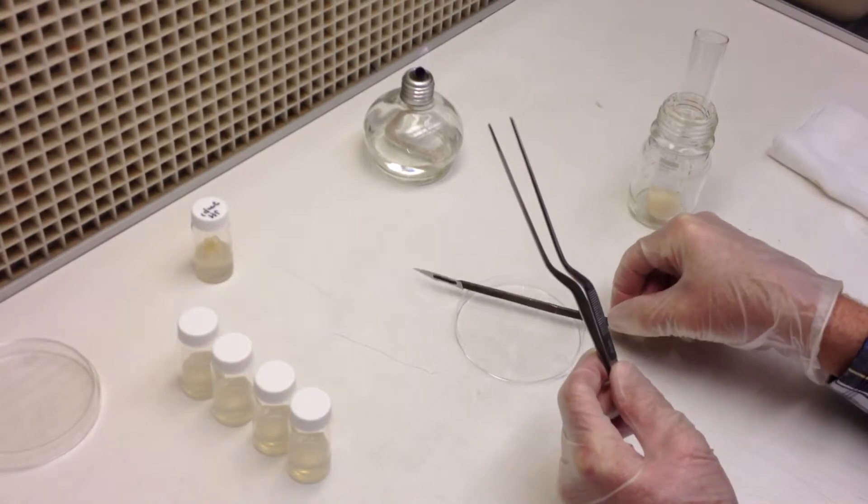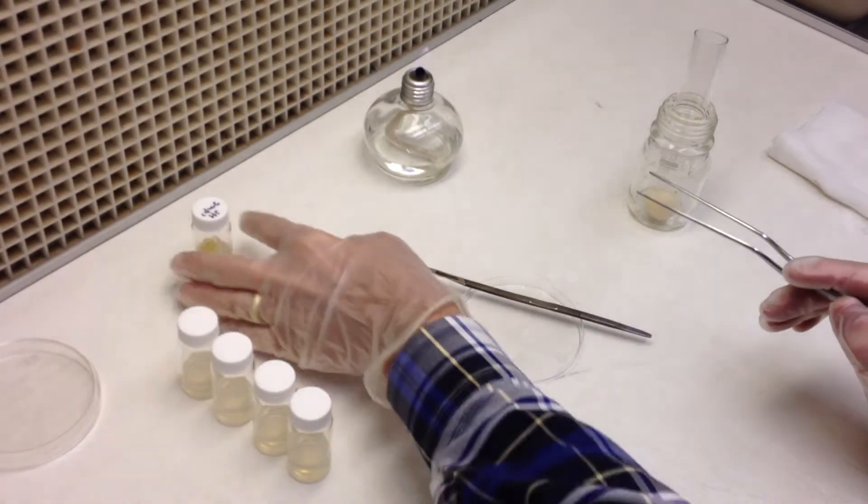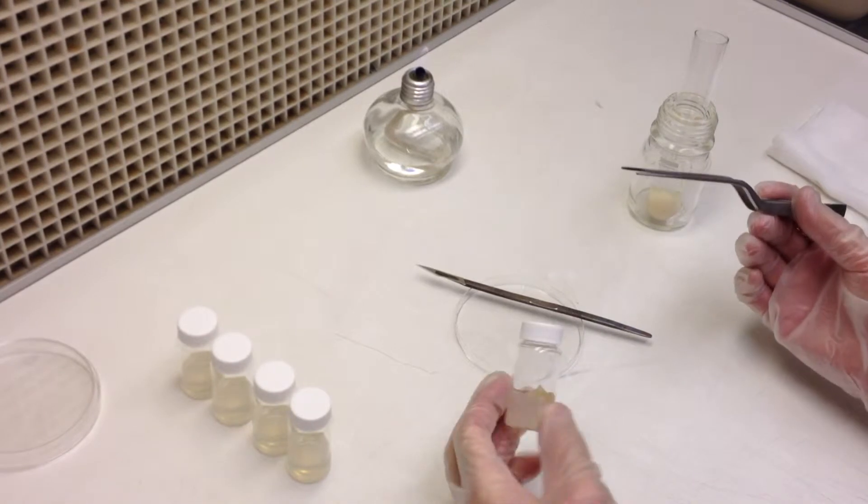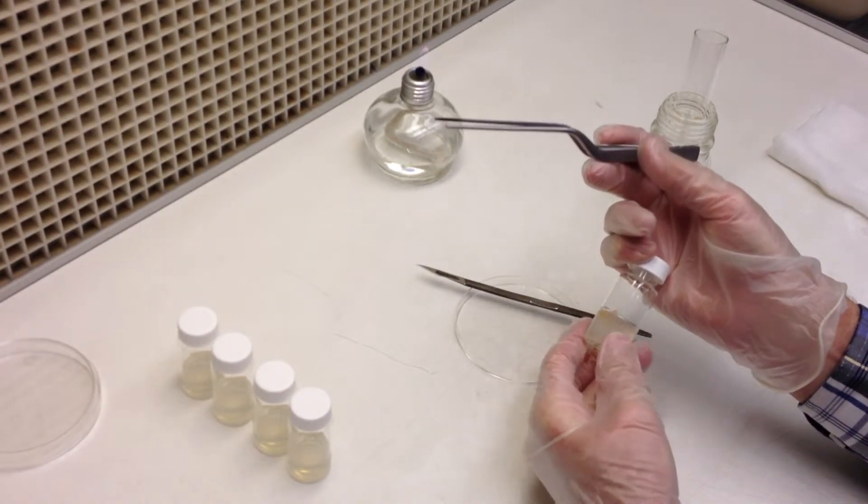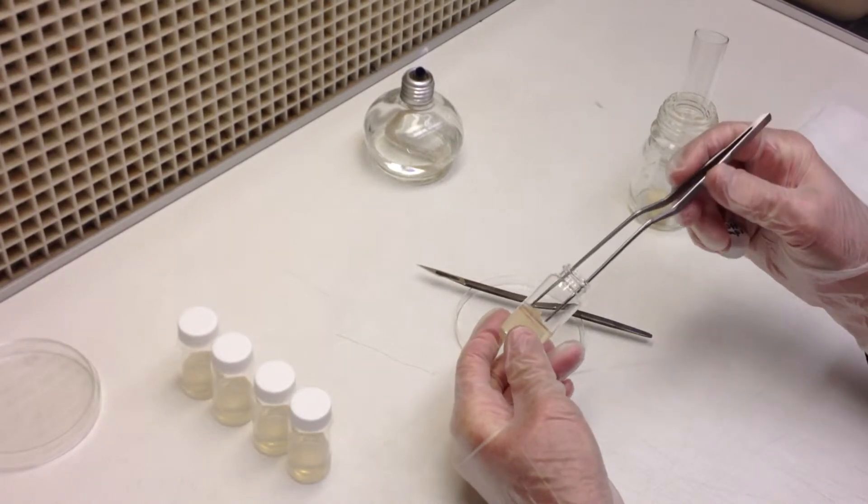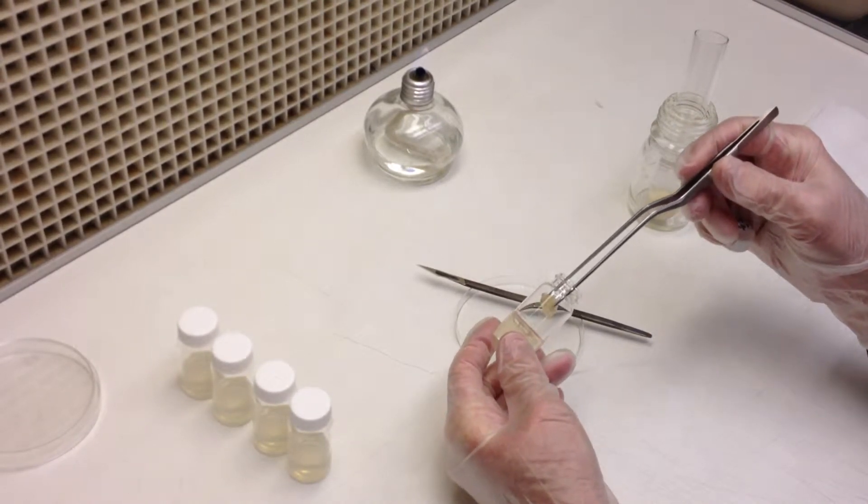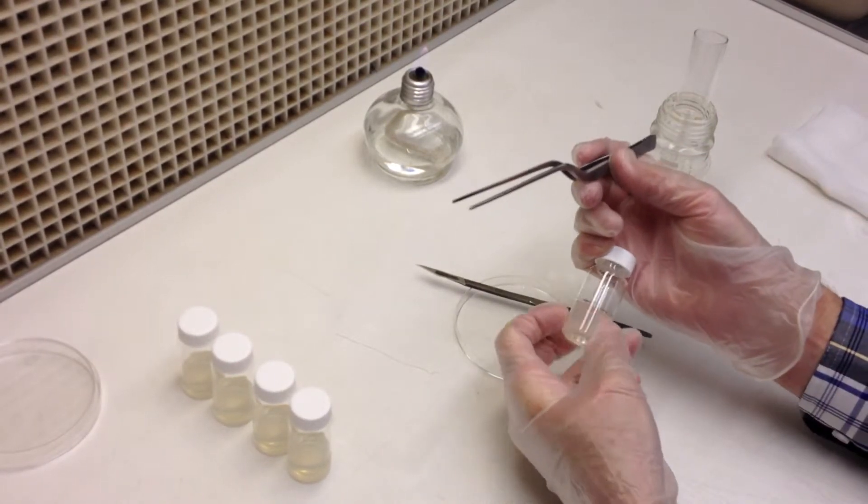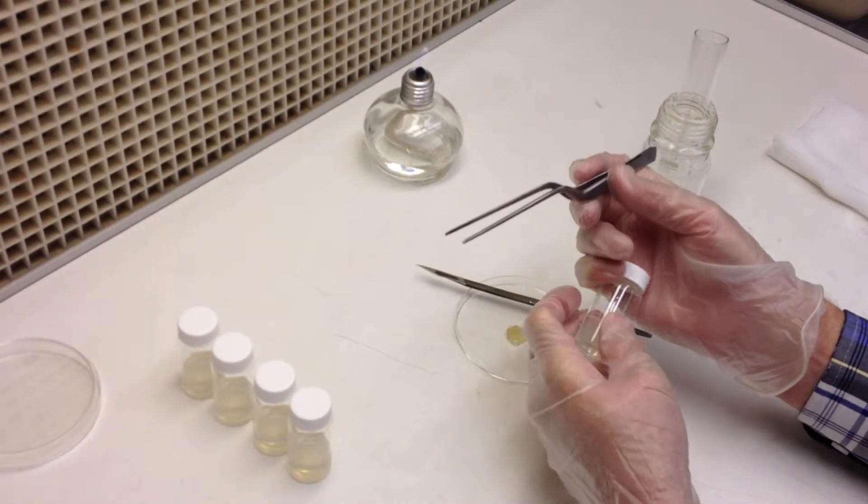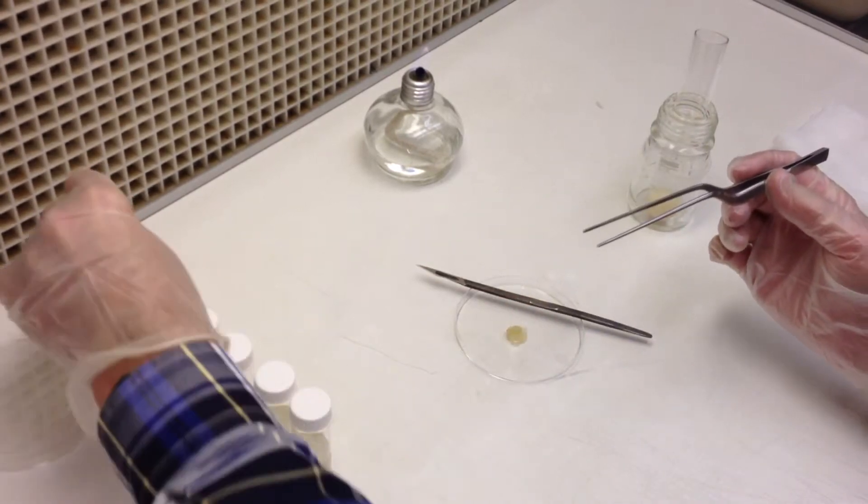Once you get the forceps and scalpel flamed and sterile, remove a piece of callus that you have from three weeks ago. It may be a pretty soft texture. You might find different textures of these calluses that have been growing. And you may not have to actually cut them apart with a scalpel. You may just be able to tease them apart with the forceps.